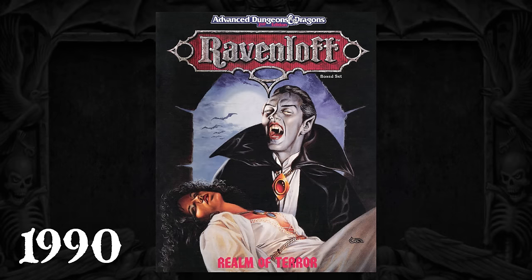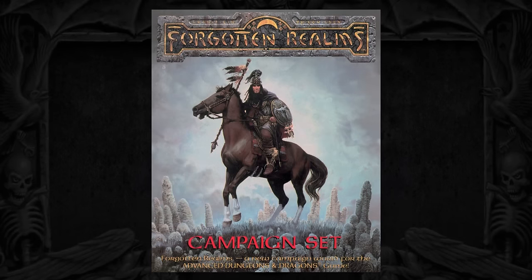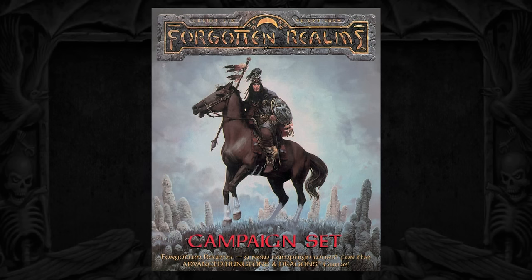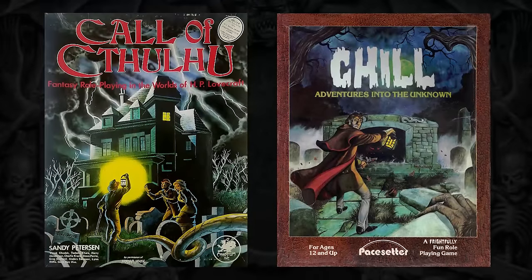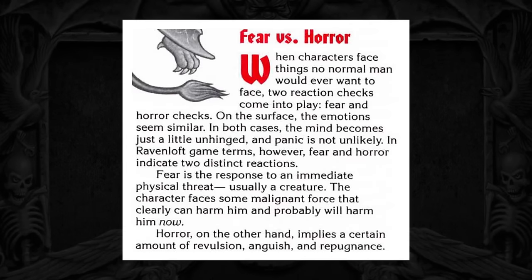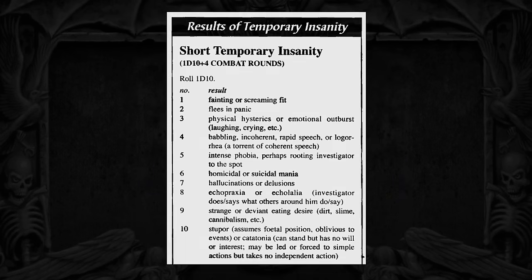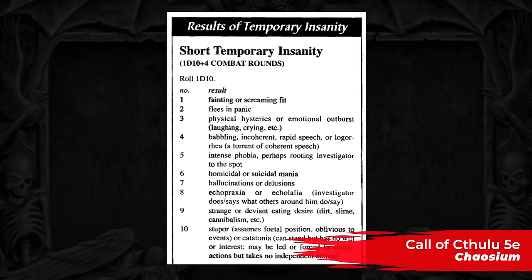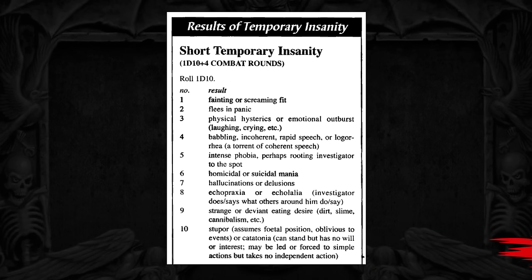TSR created a lot of different settings during AD&D's second edition's lifespan, all in an attempt to replicate the surprise success of the Forgotten Realms. Ravenloft in particular was conjured up to appeal to the growing horror RPG market. Some of the most successful RPGs outside of D&D were horror systems, such as Call of Cthulhu and Chill. The influence of these rival companies is evidenced through their introduction of fear and horror checks in the Realm of Terror rule set.